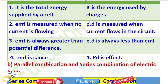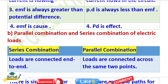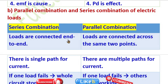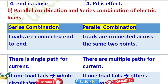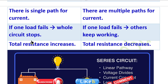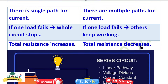Question: Differentiate between parallel combination and series combination of electric loads. In series, loads are connected one after another in a single path. In parallel, loads are connected across the same two points — multiple paths for current. In series, there is a single path for current; in parallel, there are multiple paths. If one load fails in series, all the circuit stops; in parallel, if one load fails, others keep working. Total resistance increases in series and decreases in parallel.